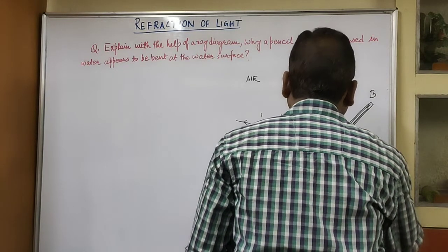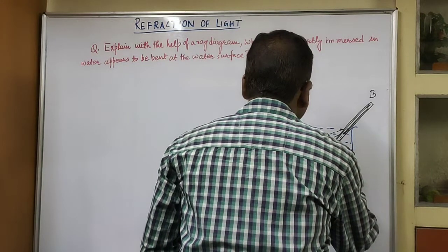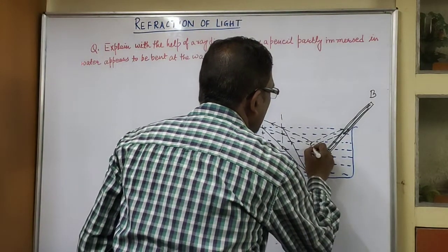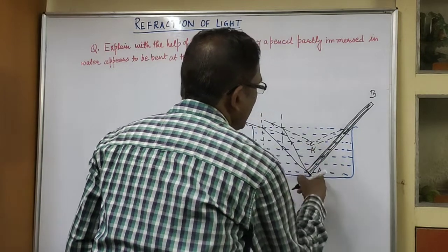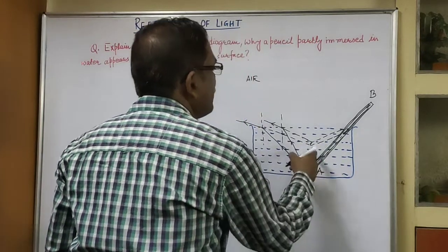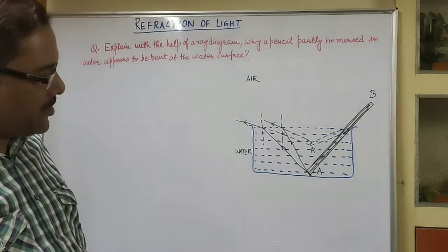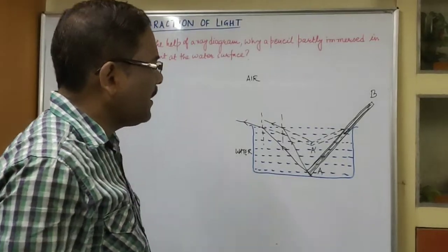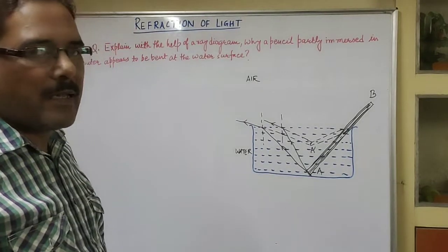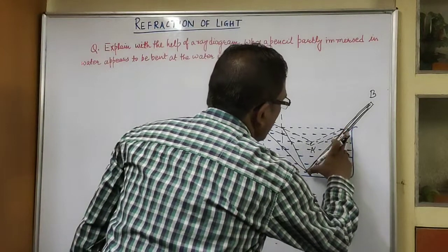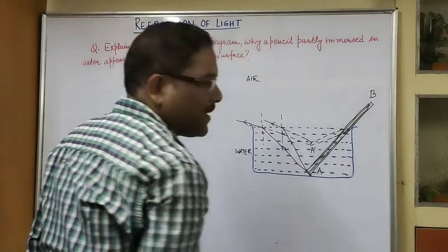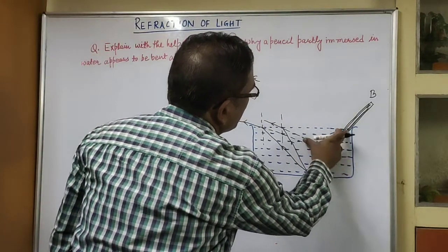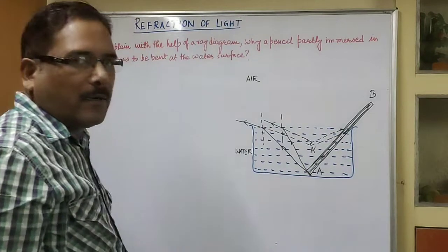When these rays are produced backward, they meet at a point, forming a virtual image of the stick. So point A appears to be raised, and the image of A is formed at A'. In this way, the submerged portion of the stick appears to be raised a little bit.